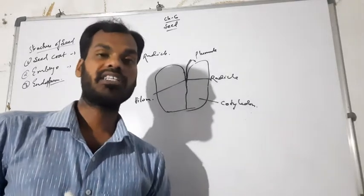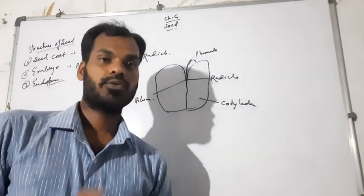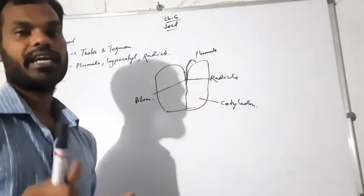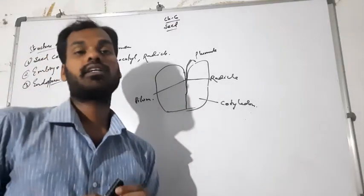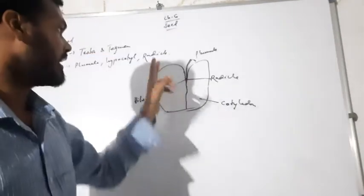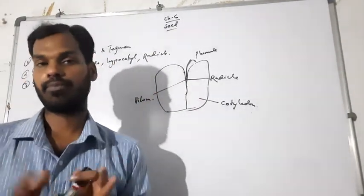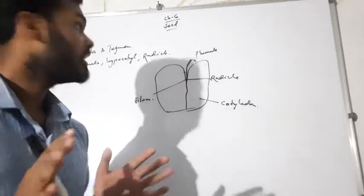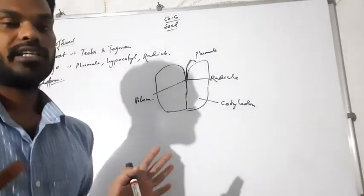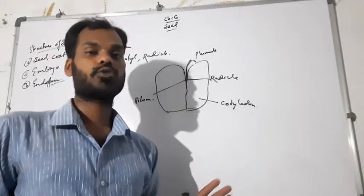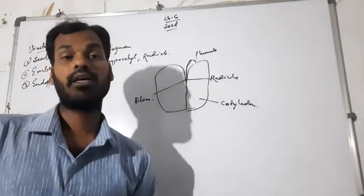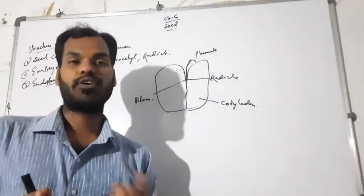Next is the endosperm. The endosperm is the part which contains the liquid food or stored food in the seed, so that it can provide nutrients to the developing seed until the radicle and plumule have developed. Once the radicle develops into roots, the roots can absorb nutrients and water from the soil directly.